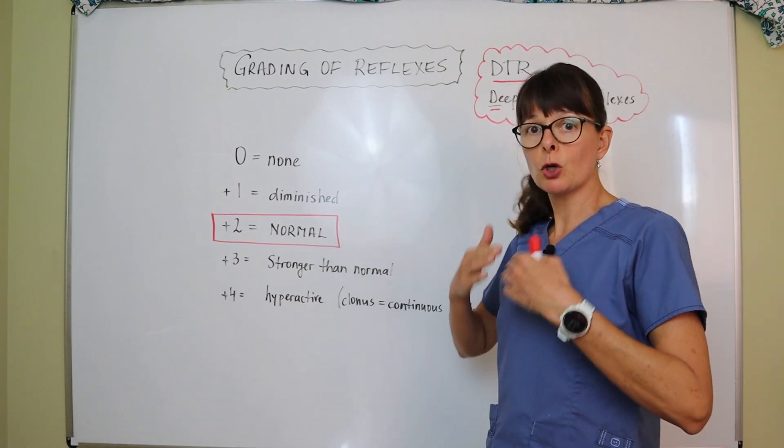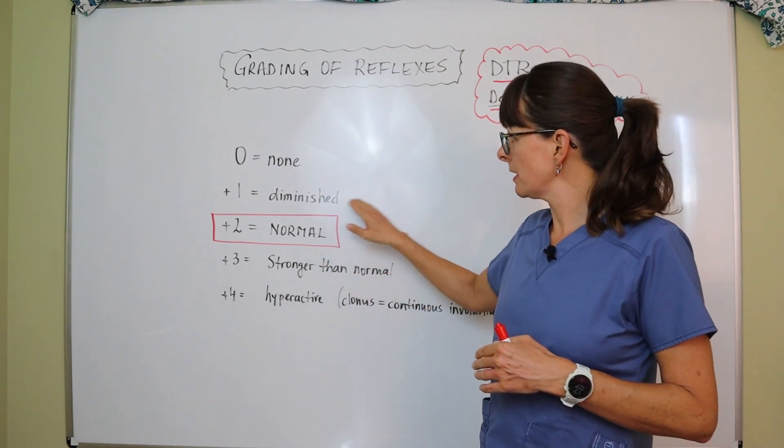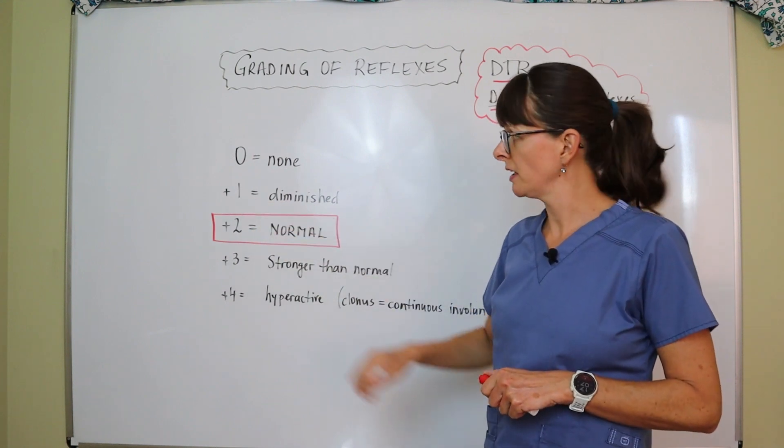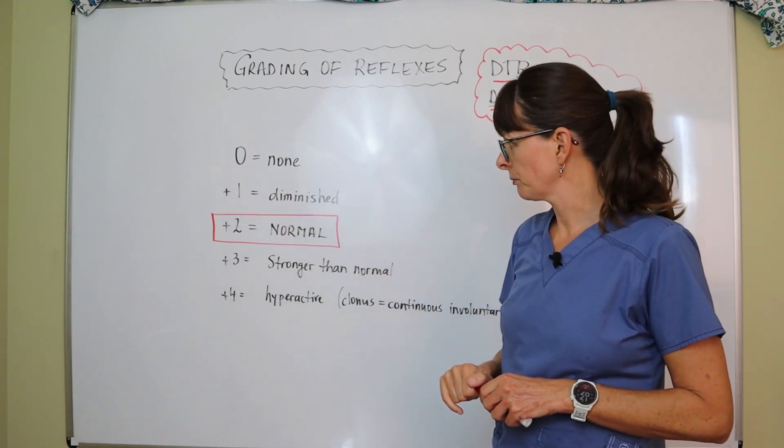If the response is not quite to that extent — if it's diminished — we grade it as a plus one. If there's no response at all, it's a zero.